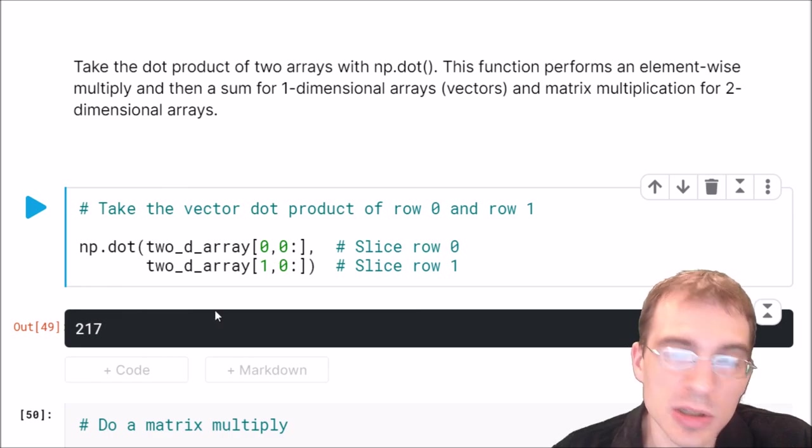Here we're going to slice our 2D array, taking the first row and the second row, and we're just going to get the dot product of those two rows.